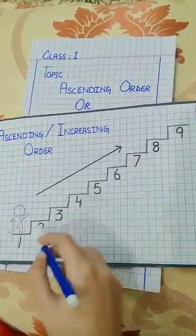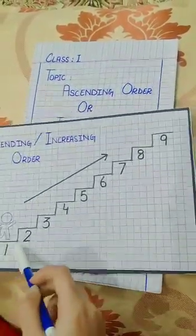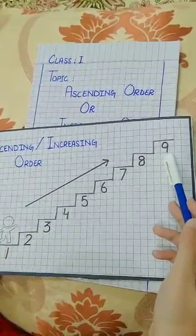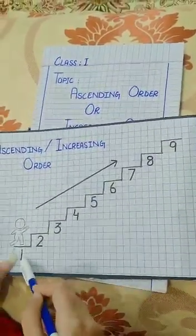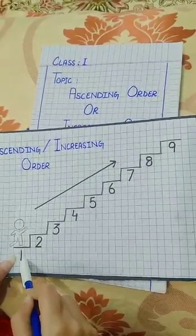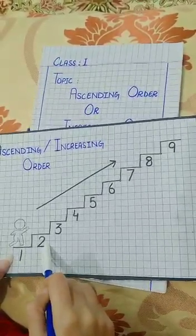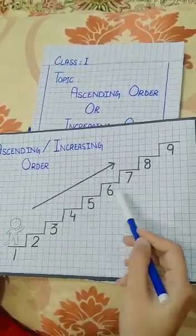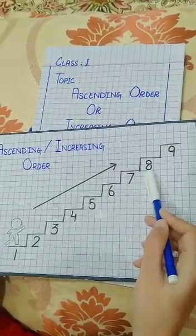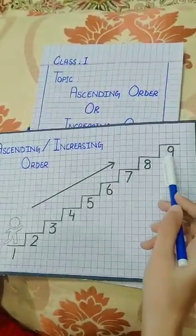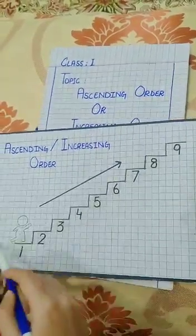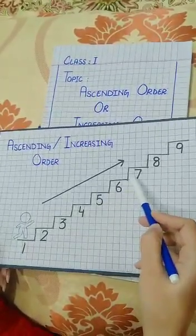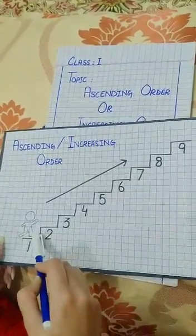Here is a friend Ali. He has to climb nine steps which are numbered 1 to 9. Ali starts from step number 1, then to step number 2. He climbs on step number 3, 4, 5, 6, 7, 8, and finally to step number 9. Did you observe that as he climbs up each step, he is ascending or moving to a greater number than the previous number?